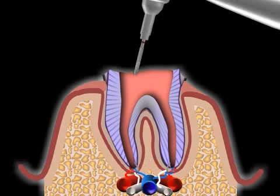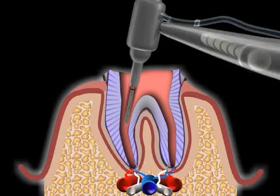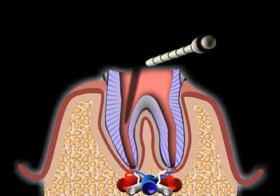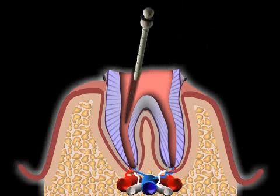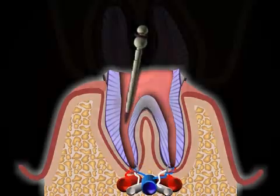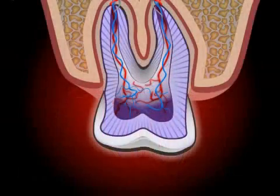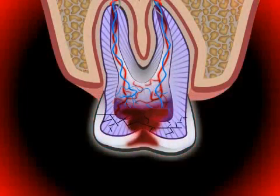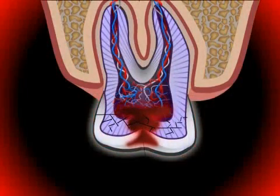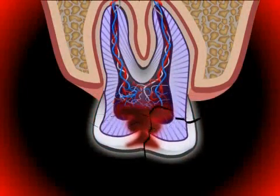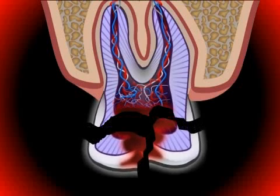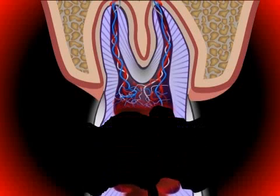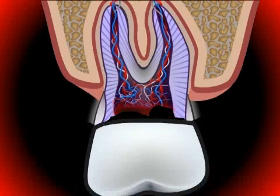In dentistry, root posts are used for the retention of artificial teeth. If a tooth has been destroyed by a deep cavity so that there's nothing left of the tooth's original crown, then it won't be possible to fit that tooth with a crown because the crown wouldn't have any hold.